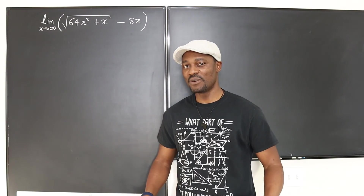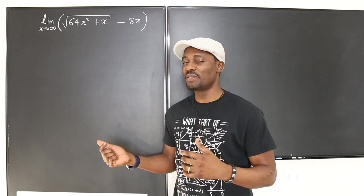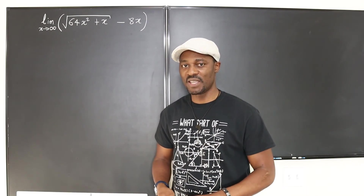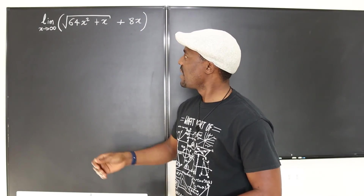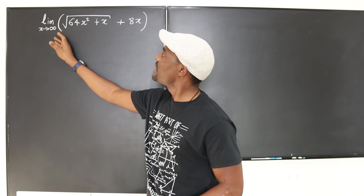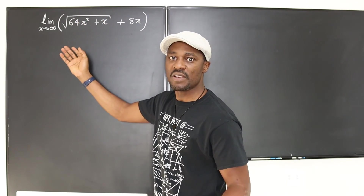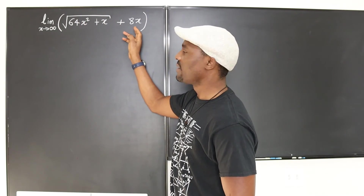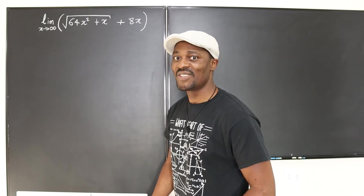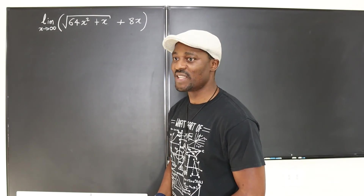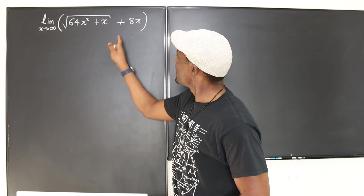Welcome to another video. This is a limit at infinity — as x goes to infinity. If this sign were a plus, you'd tell yourself: as x goes to infinity, this becomes a very large number. The square root of infinity is infinity, and 8 times infinity is another infinity. You just add infinity to infinity and get infinity — your answer would simply be infinity.